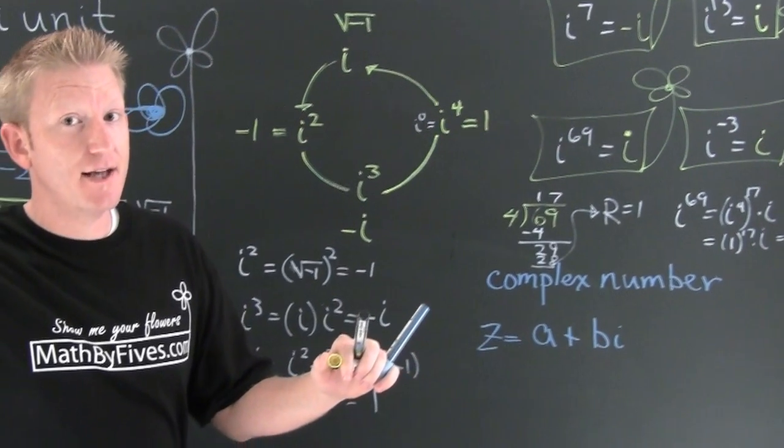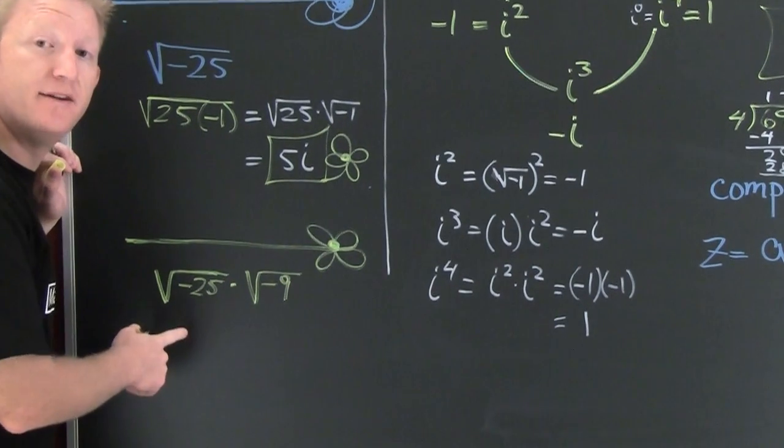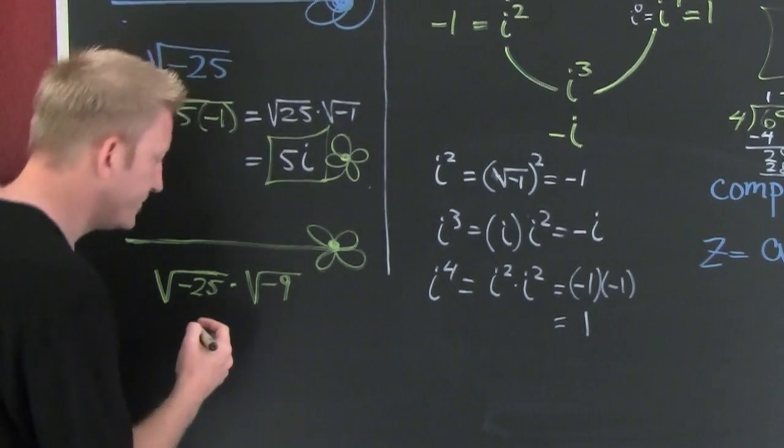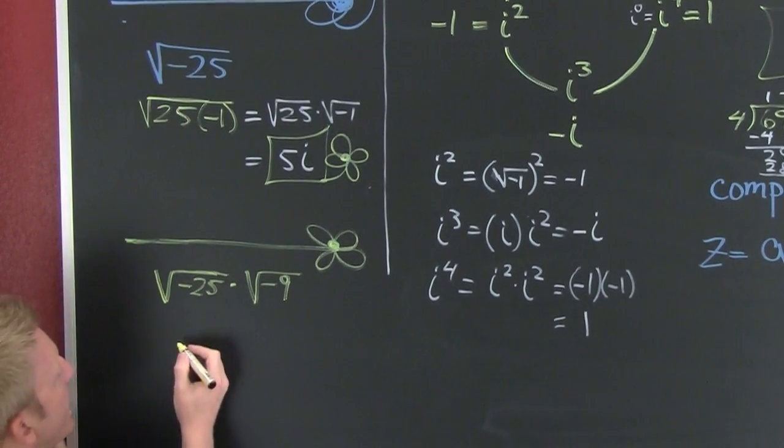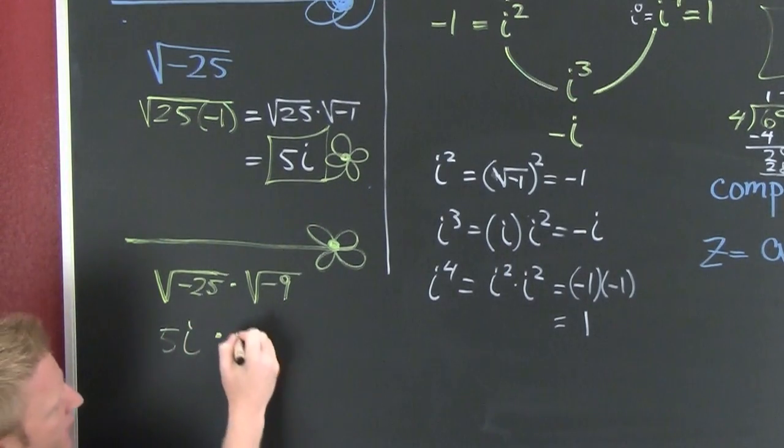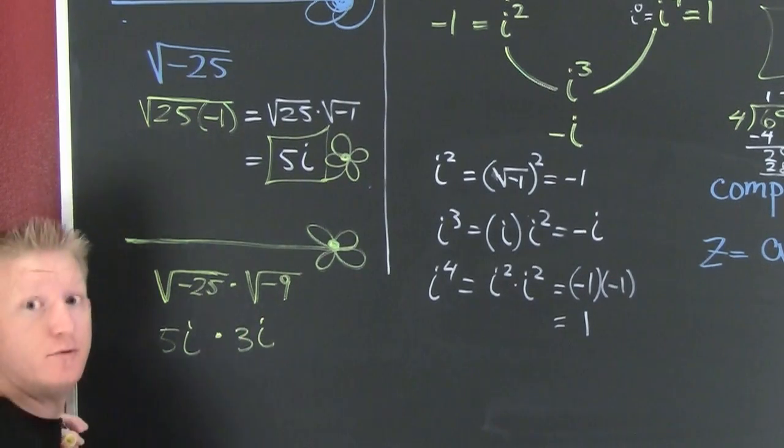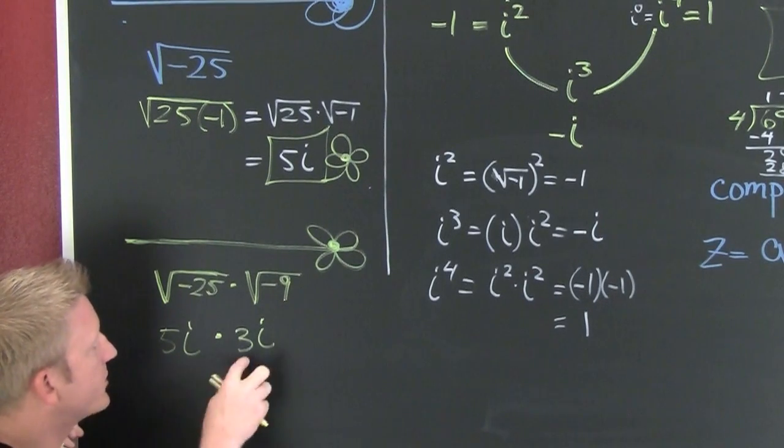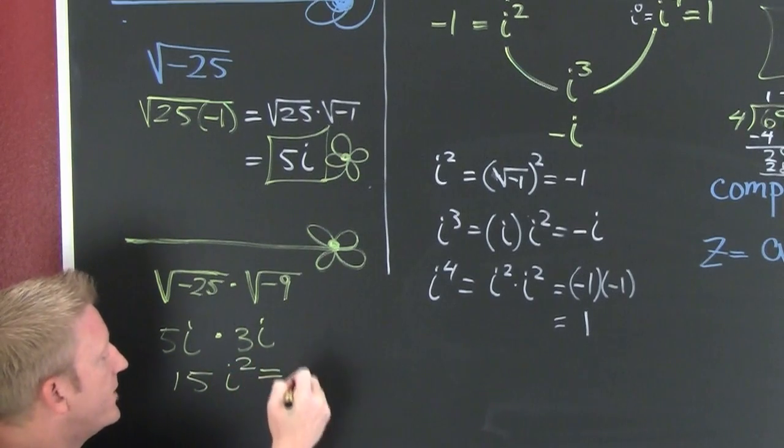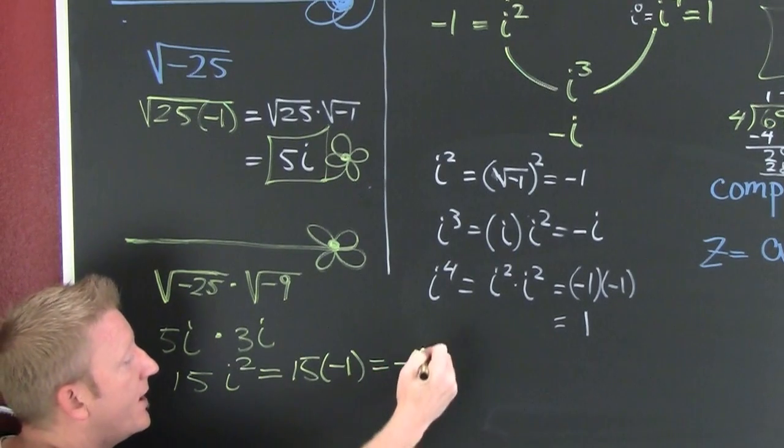Now that that's all said and done, let's come down here. When we have the product of these roots, the first thing you need to do is pop an i out. This is going to be 5 times 3i. There I am. I'm going to multiply the numbers in front—that's 15 i squared. But what was i squared? It was minus 1, which is going to be minus 15.